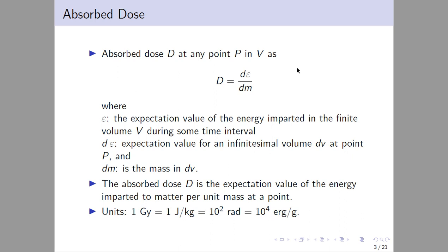The absorbed dose at any point P in the volume V is D = dε/dm, where ε is the expectation value of the energy imparted in the finite volume V during a time interval, dE is the expectation value at the infinitesimal volume dV at point P, and dm is the mass in dV. The absorbed dose is the expectation value of energy imparted per unit mass at a point. The unit is one Gray, equal to one joule per kilogram, equal to 100 rad or 10^4 erg/g.